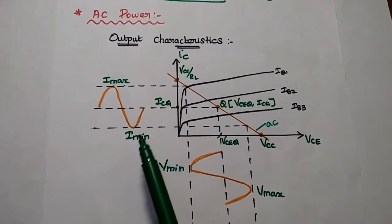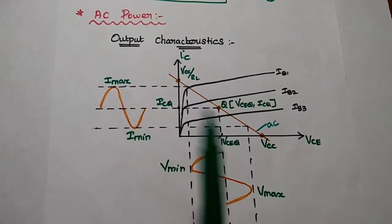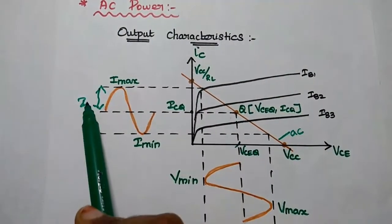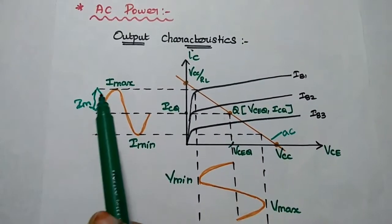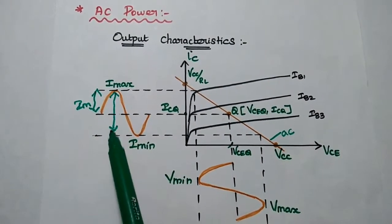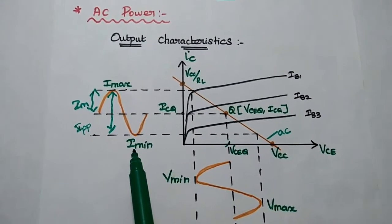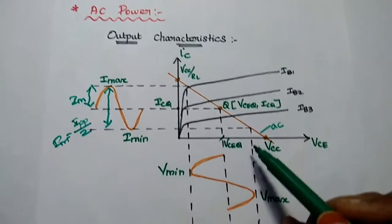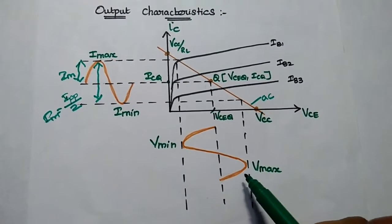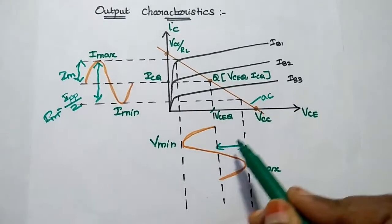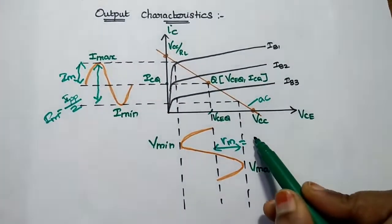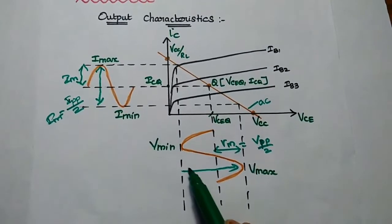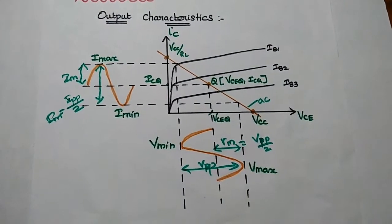With respect to the Q point, we get the swing of output current and output voltage. The maximum current Im equals Ipp (peak-to-peak current) divided by 2. Similarly, the voltage swing Vm equals Vpp (peak-to-peak voltage) divided by 2.